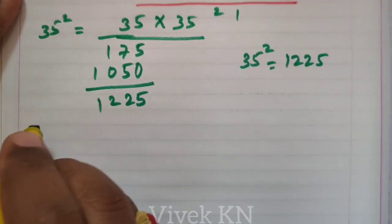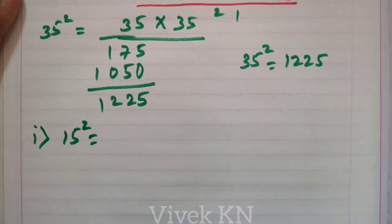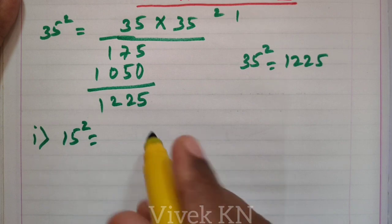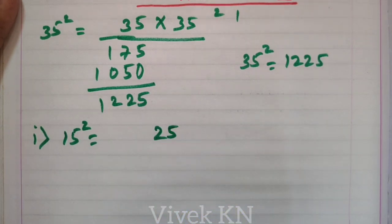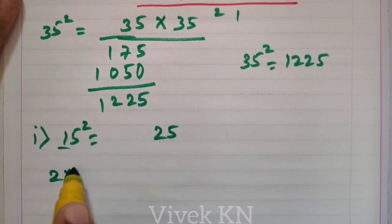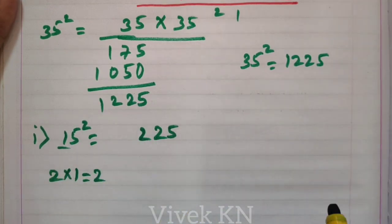For example, 15 square. Here, the value of 5 square is 25. Next, the number that comes after 1 is 2. We have to multiply this 2 to the first digit of the given number. That is, 2 into 1 equals 2. Hence, 15 square is 225.